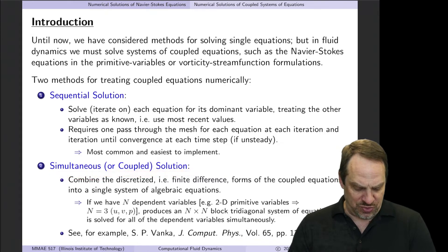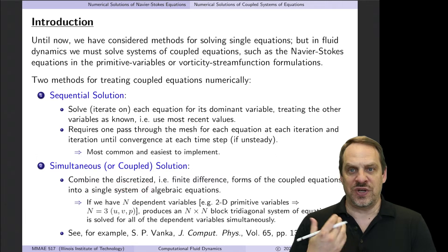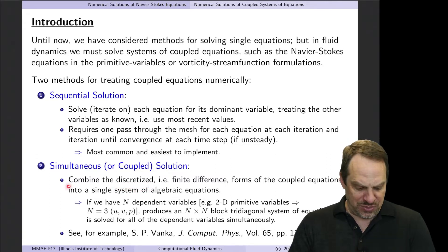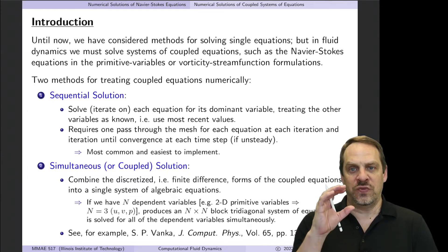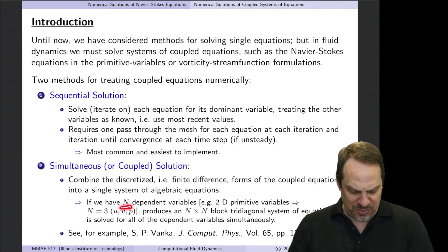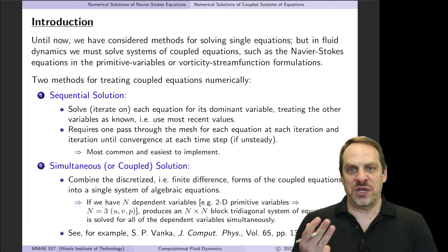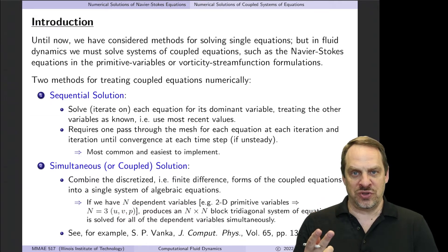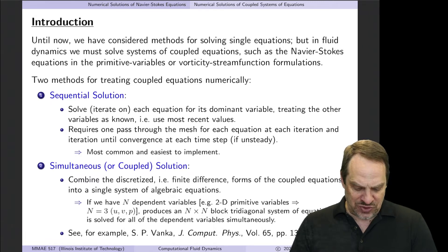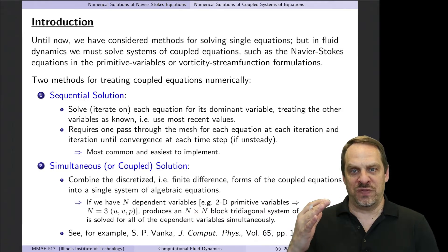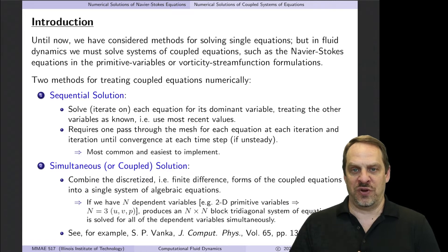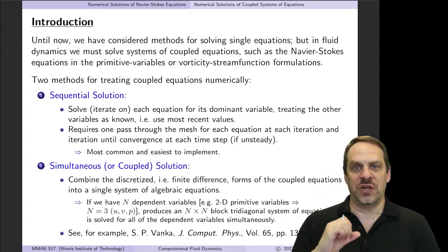The simultaneous solution procedure is where you take the discretized equations — the finite difference equations themselves — and combine them into a coupled form. You have a single system of equations for all of the variables rather than multiple systems for each equation individually. For example, if we had N dependent variables — that's 3 in the 2D primitive variables formulation and 2 in the vorticity-stream function formulation — that would produce an N×N block tridiagonal system of equations. Solving it yields all dependent variables at once, rather than sequentially one by one.